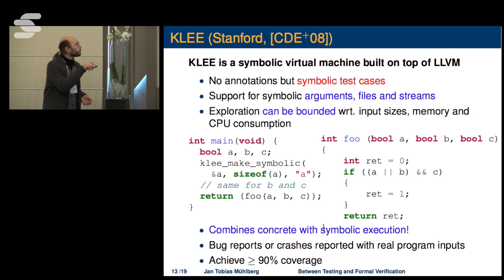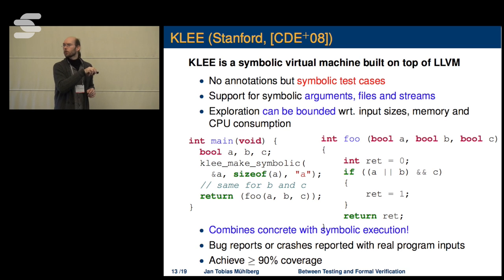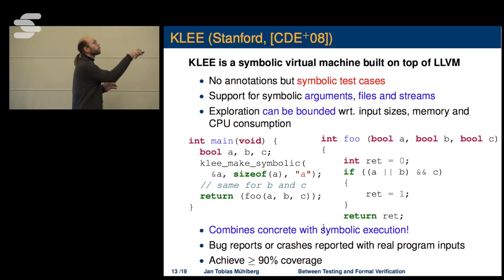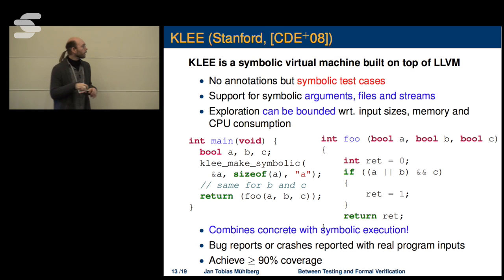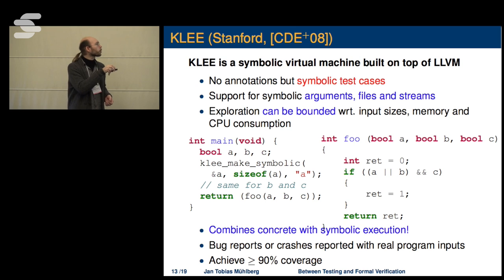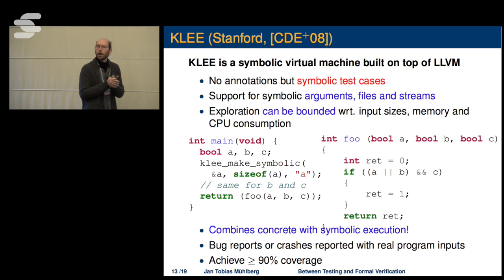KLEE works by combining concrete and symbolic executions — meaning it actually executes the code, so don't put missile launch code in there. It reports bugs including memory violations, divisions by zero, and violated assertions. Using many symbolic variables, you typically get very high test coverage — branch coverage around 90–100% — which is far beyond what you normally get in industrial software development.